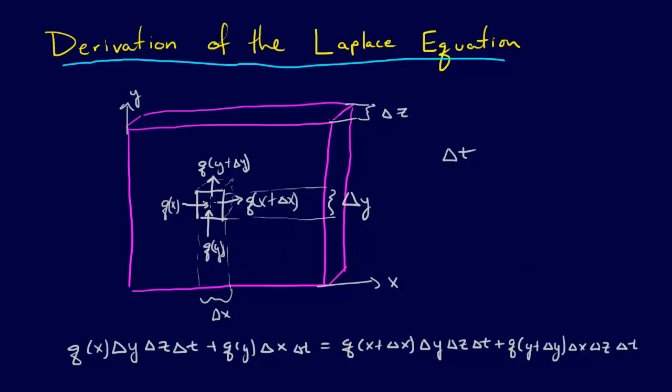Then what we can do is just simplify this equation. You can see right away that the delta z delta t's are going to go away. This should have a delta z. The delta z delta t's are going to go away because they're in everything. So we can just divide by those. And then we can collect these q's over onto one side. And then I'll just show you what we get here.